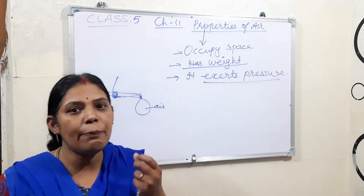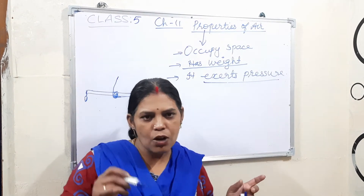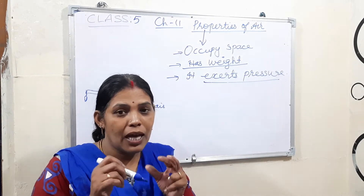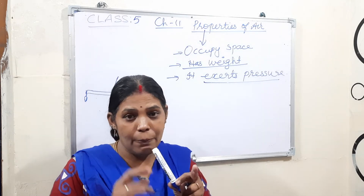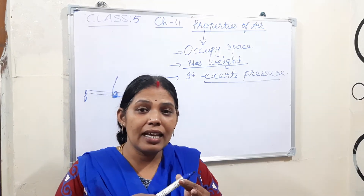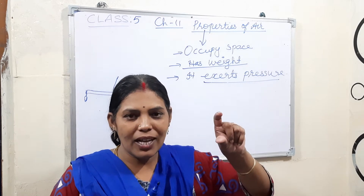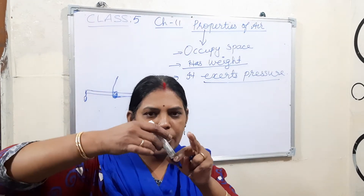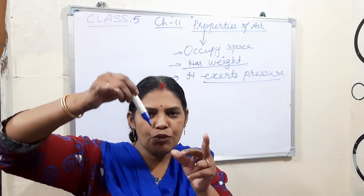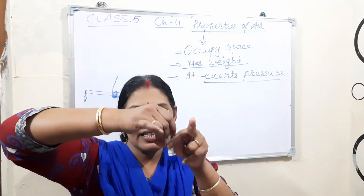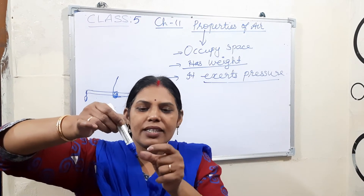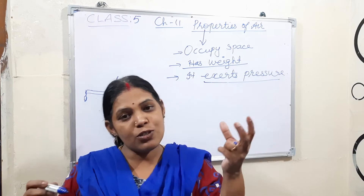And we can say this - the fountain pen. From fifth class onwards you people are using the pen for writing notes. Some people are using the fountain pen, some are using the gel pen, some are using the ball pen. For a fountain pen, there is a separate ink bottle and a filler. If you press the filler and put it inside the ink bottle, then when you release your finger, the ink goes inside. That is also because of the air pressure.